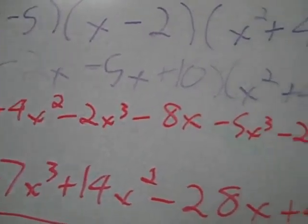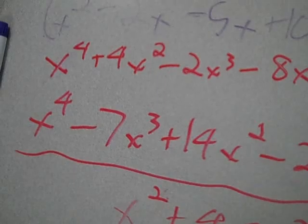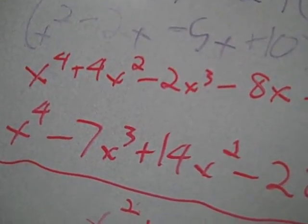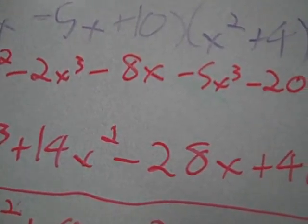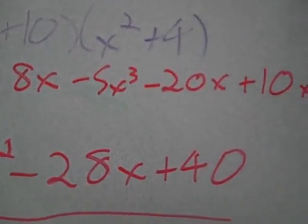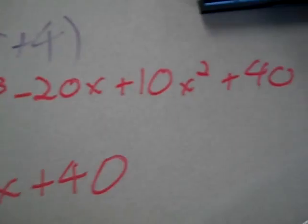Then you multiply that times x squared plus 4 and you factor again. Then you get x to the 4th plus 4x squared minus 2x cubed minus 8x minus 5x cubed minus 20x plus 10x squared plus 40.